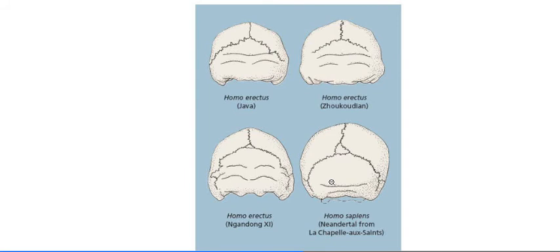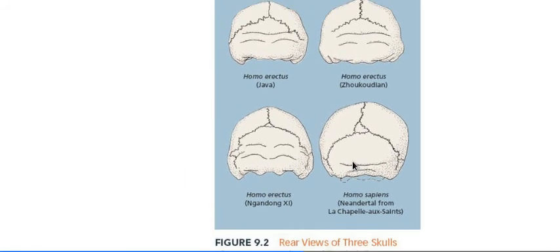Here's a question to consider: Neanderthals developed a cranial capacity higher than ours — over 1400 cubic centimeters — whereas we have about 1300 and some cubic centimeters. We tend to think of Neanderthals as brute-like animals that we superseded, but they have a higher cranial capacity. What do you make of that? That's a question we will address later on.